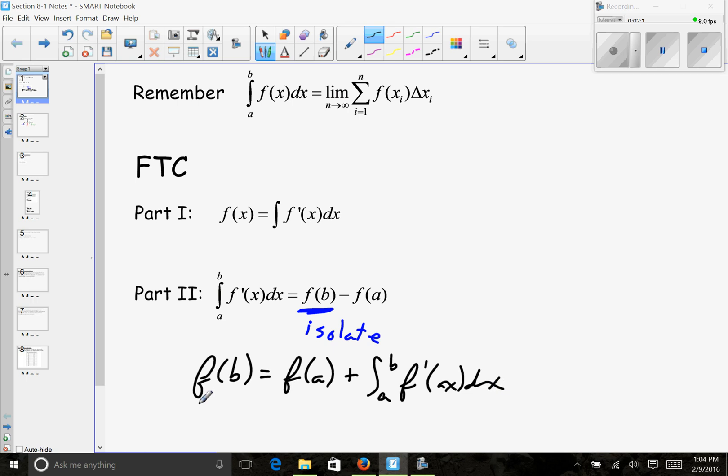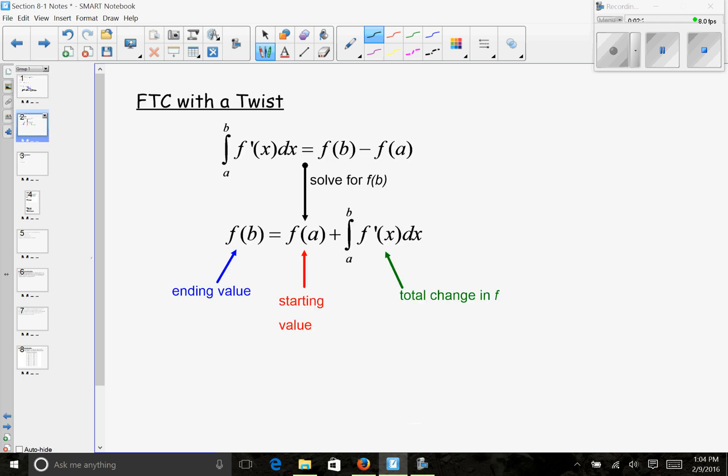This is probably the most useful bit of information about integrals and derivatives when it comes to applications. I call this FTC with a twist—it's taking part two and isolating f of b. What we can then say is that f of b is an ending value, f of a is a starting value, and the integral is taking all of those little tiny changes that f prime represents and finding the total change. So this FTC with a twist is very important.